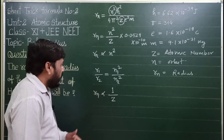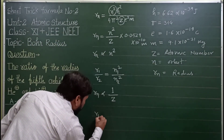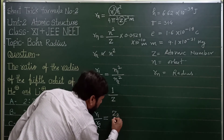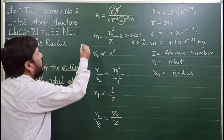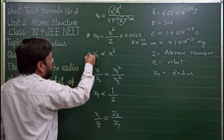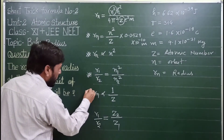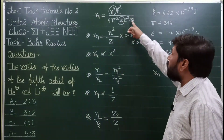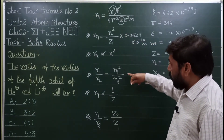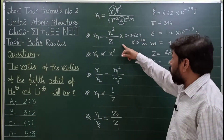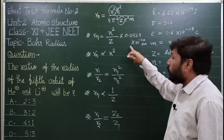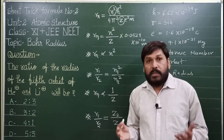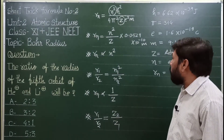इन छोटे-छोटे formulas से calculation बहुत small हो जाएगी और आप इस formula को apply कर पाएंगे। This formula is applied like this — this question asks for the ratio of the radius of the fifth orbit.